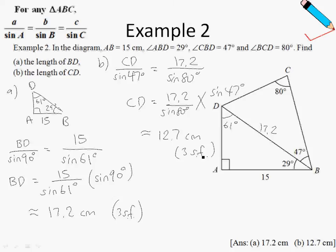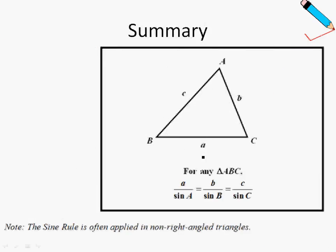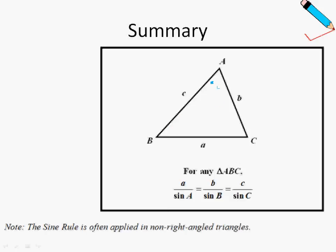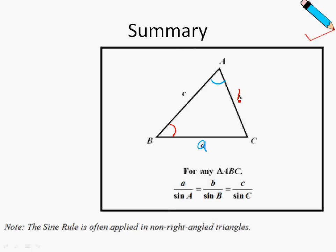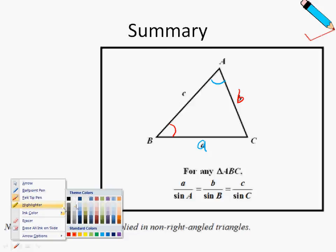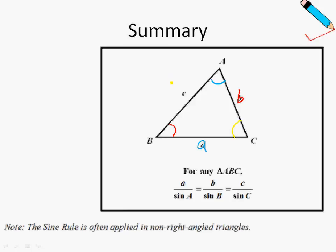I hope this example has helped you better understand the sine rule. In the next part we will talk about the cosine rule. To summarize: for any triangle ABC, identify the opposite angles — the side opposite angle A is small a, opposite angle B is small b, and opposite angle C is small c. Then write the ratio: a over sine A equals b over sine B equals c over sine C. This is the sine rule, and take note that it is often applied to non-right-angled triangles.